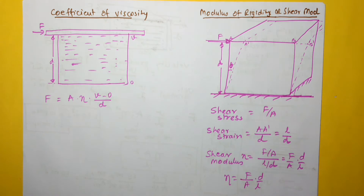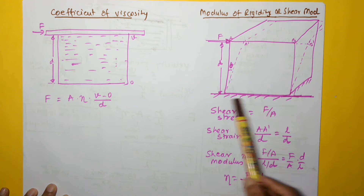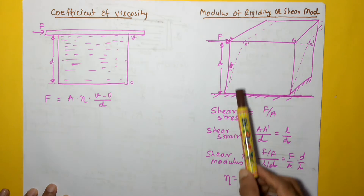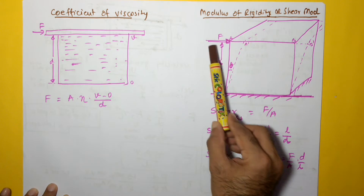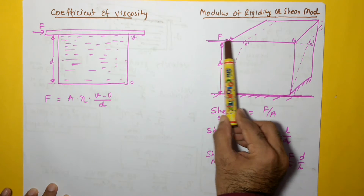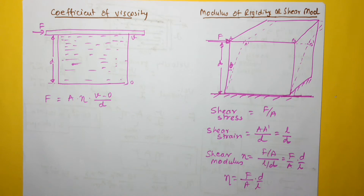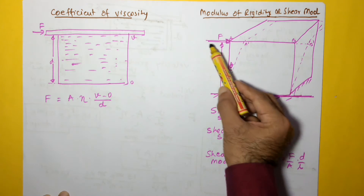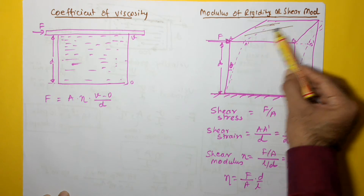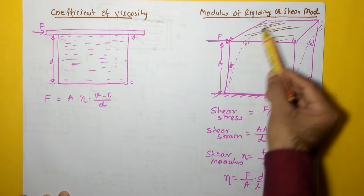Let us first look at modulus of rigidity. In the discussion on elasticity, we looked at modulus of rigidity. Say we have a solid placed on a surface and it is rigidly held at the base — it is not able to move from there. If we apply a force F on the top surface, the solid deflects. The shear stress that comes into play is force upon this particular area.